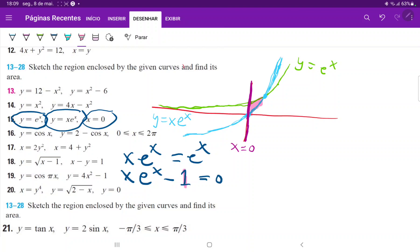x e to the x minus e to the x is equal to 0, and then we just factor it. We have e to the x, then x minus 1 is equal to 0. So e to the x will never be equal to 0. So the only way that this equation can be equal to 0 is if this factor over here is equal to 0. And that factor is when x is equal to 1. So we do have that our bound is that x is equal to 1.